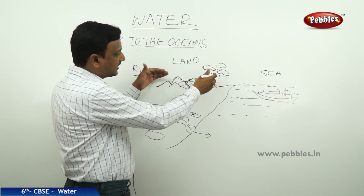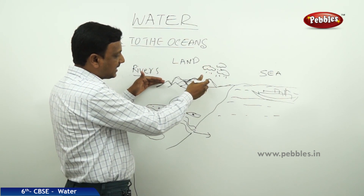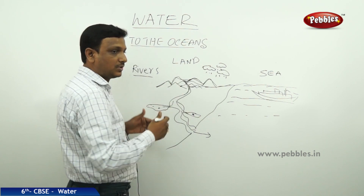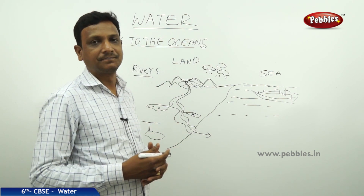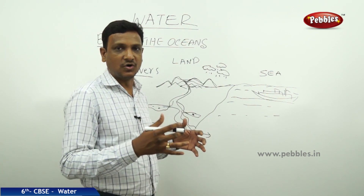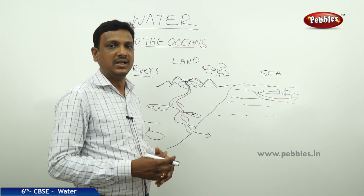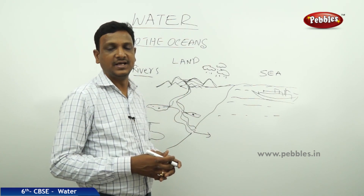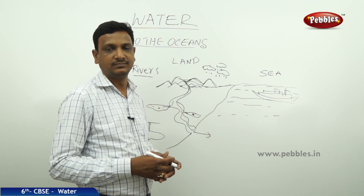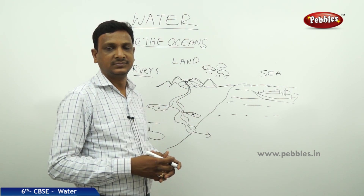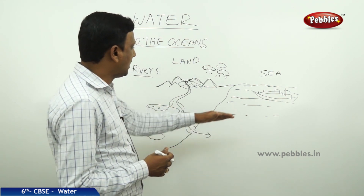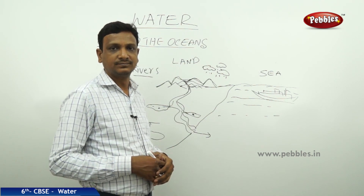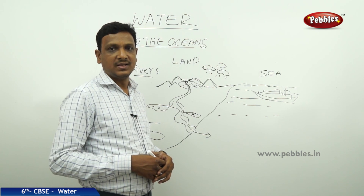The water falling on the land goes to the rivers, and sometimes to ponds and lakes. All these water bodies are charged by the rainwater, and excess water flows back into the sea or ocean. This is how water is circulated.